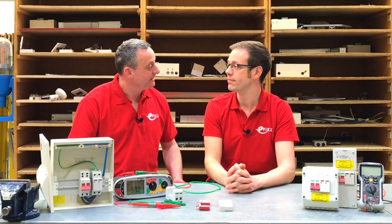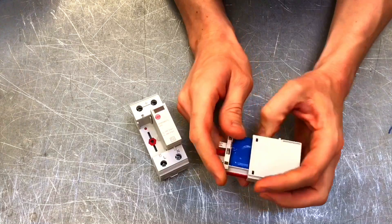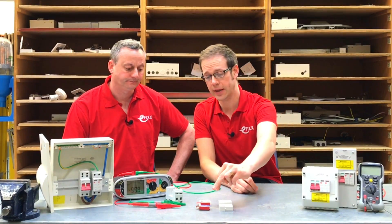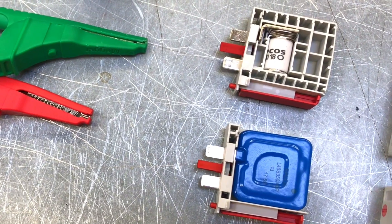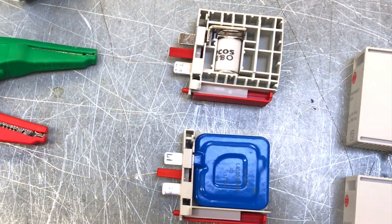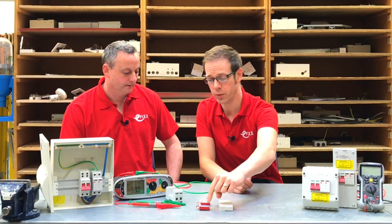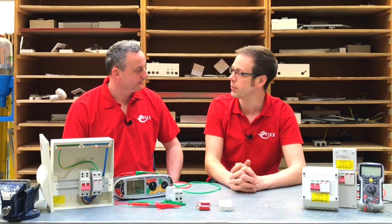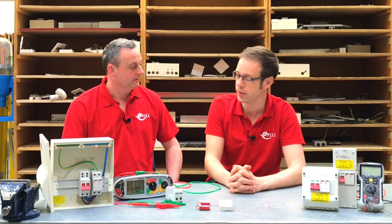So Joe, in a previous video presentation we took a type 2 surge protection device and opened it up and had a look inside it. What did we find when we looked at it? We opened up the line to earth connection and the neutral earth connection inside these surge protection devices. Inside the line to earth one we found a varistor and inside the neutral to earth one we found a slightly different type of technology, the gas discharge tube.